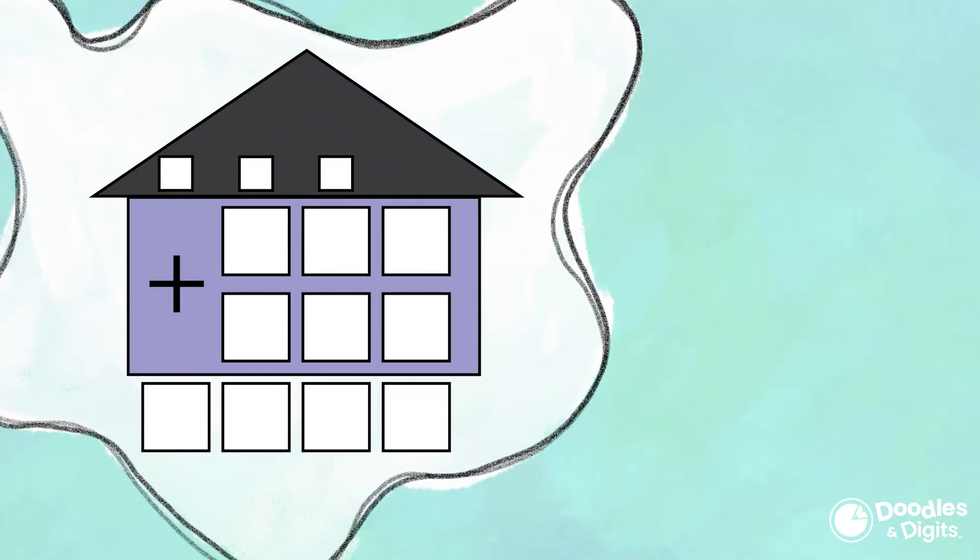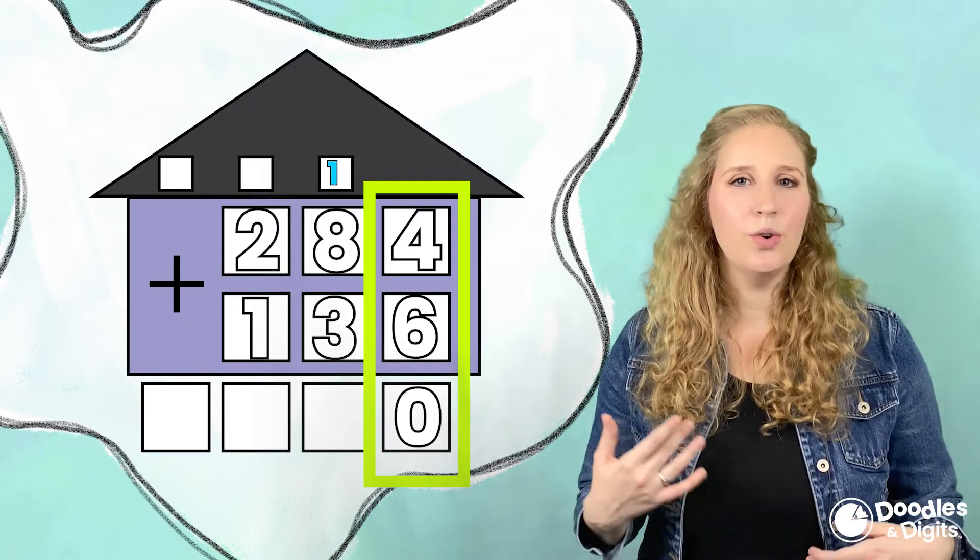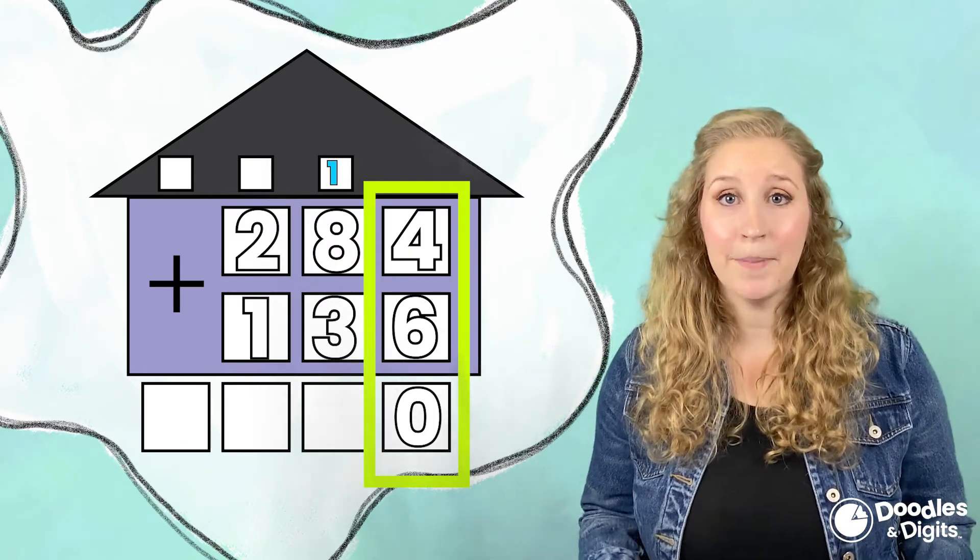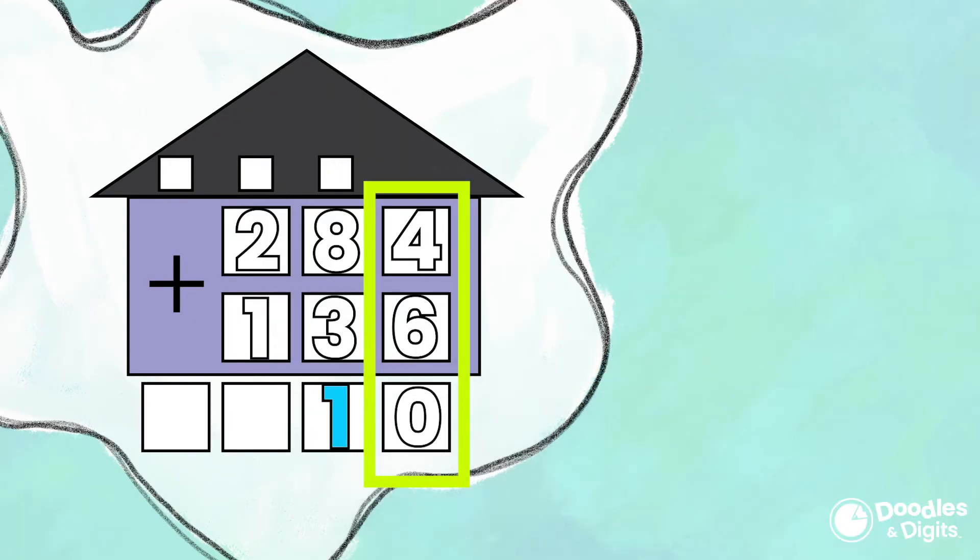Let's look at this problem right here. 284 plus 136. We're going to start in the ones place. 6 plus 4 is 10. Alright, so why are we carrying numbers greater than 10? What's going on with that? A few reasons that we carry the number to the tens place. The first reason is there's not any room.